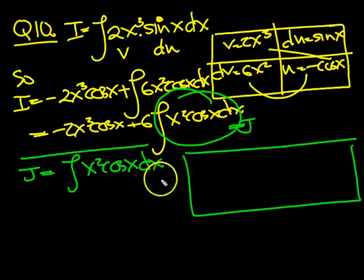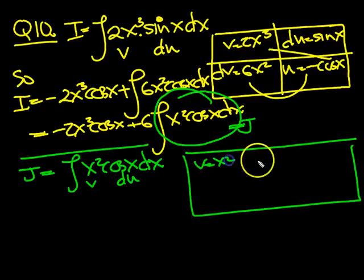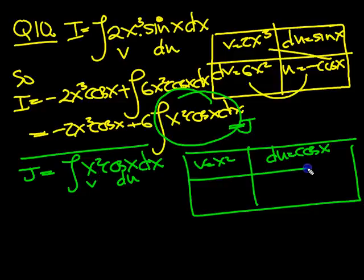So what have we got then? Let's do v, and then du. So v is equal to x squared, du is equal to cosine x. So du v will equal 2x, and u will equal sine x.